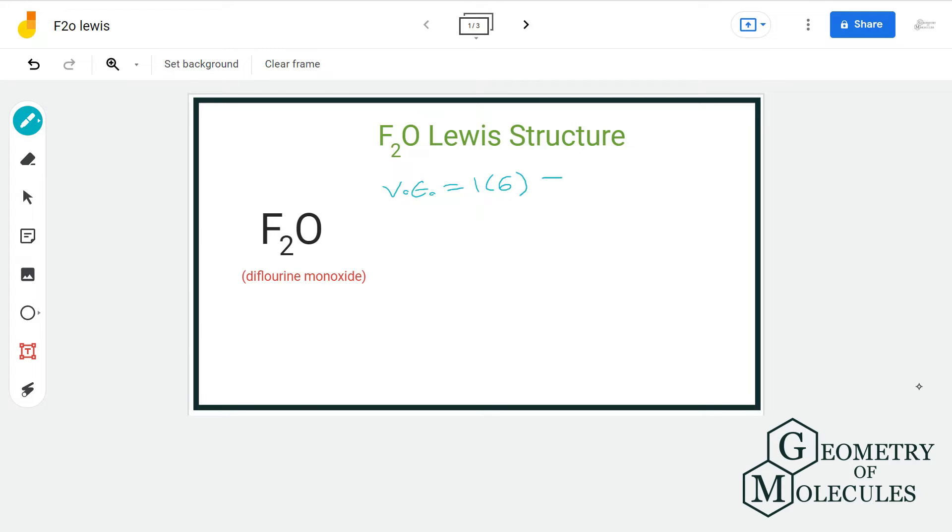oxygen atom having six valence electrons and two fluorine atoms having seven valence electrons. That gives us a total of 20 valence electrons. For the arrangement of atoms, we will put oxygen in the center and arrange fluorine atoms around it like this.